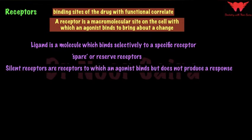You also have something called silent receptors. These are receptors to which an agonist binds but does not produce a response — they are basically functionless receptors. So, a receptor is a macromolecular site on the cell with which an agonist binds to bring about a change.